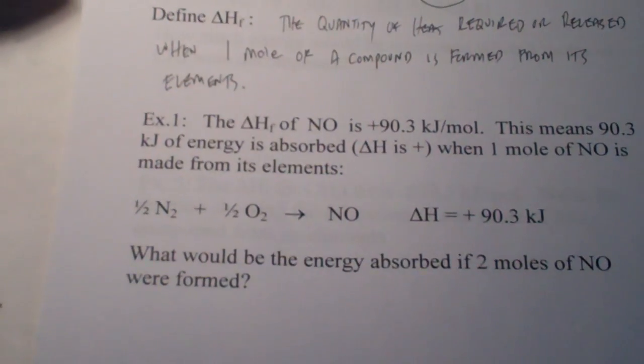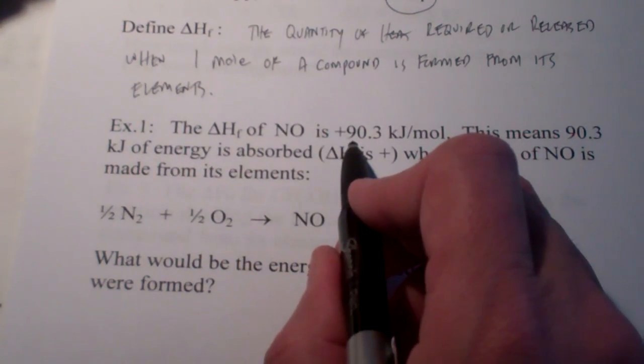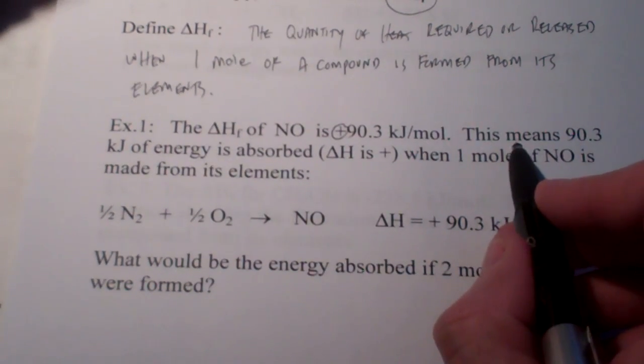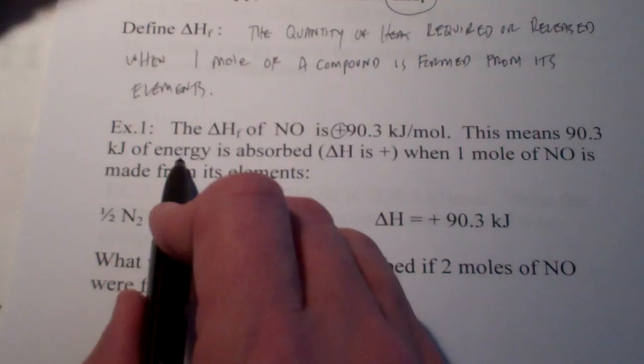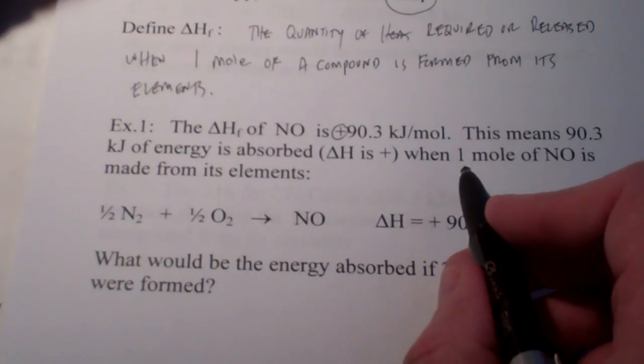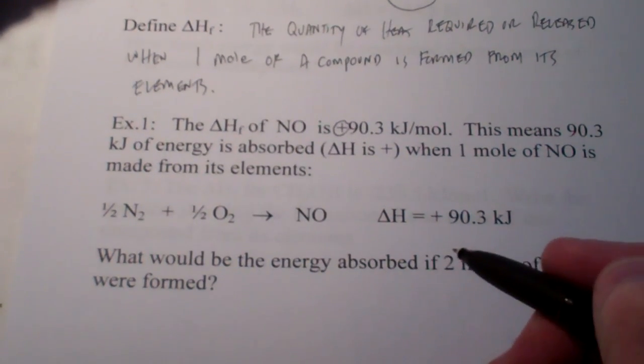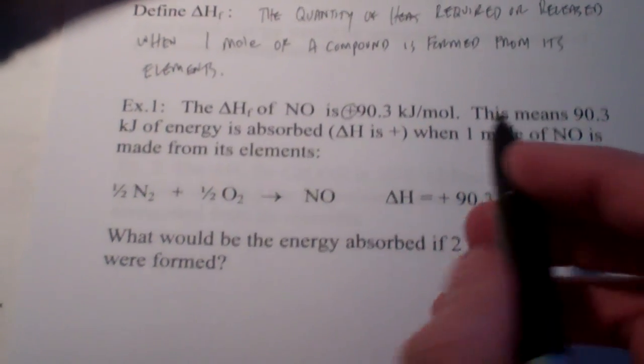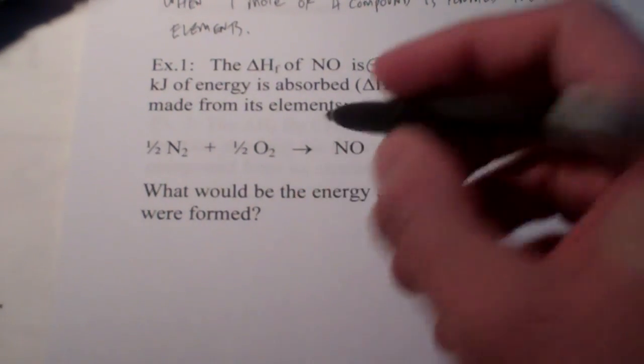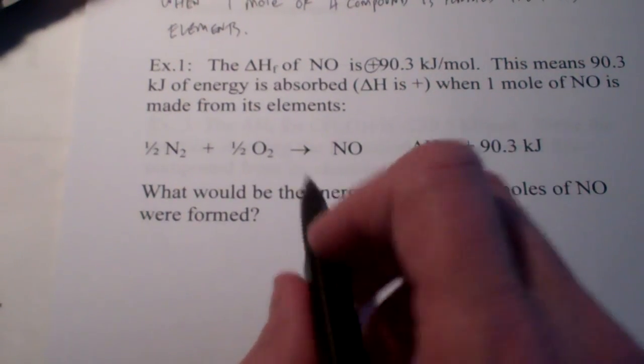Let me give you a good example. The heat of formation of nitrogen oxide is positive 90.3. Now, think about this. There's a positive sign here. Remember, this means 90.3 kilojoules is absorbed, or added. Remember, delta H is positive, when one mole of nitrogen oxide is made from its elements. So, let's write the reaction for the formation of NO from its elements. So, we're going to form NO. There's my compound, and I'm making one mole. And, I don't have to write the number one there.